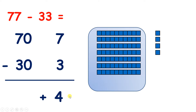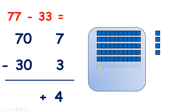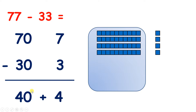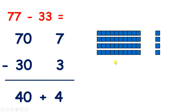So looking at the tens, we start with 70, or 7 tens, and we want to subtract 30. Well, 30 is 3 tens, so let's take away 1, 2, 3 tens, and that leaves us with 4 tens, or 40. So what do we have left? We have 4 tens, or 40, and 4 units, so we have 44.